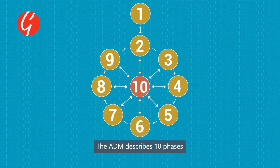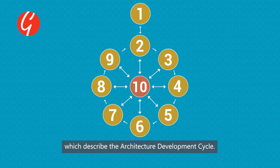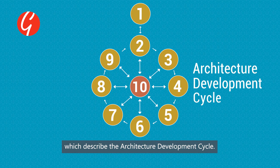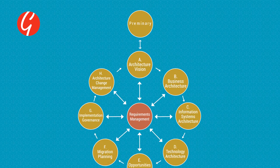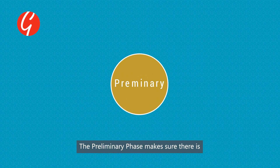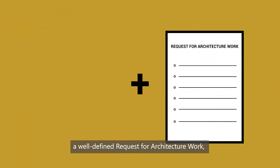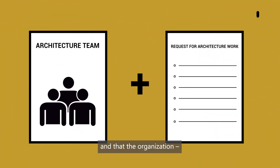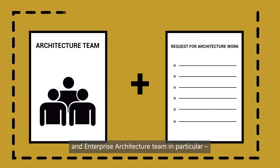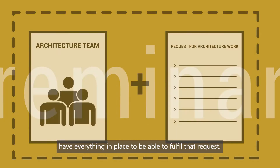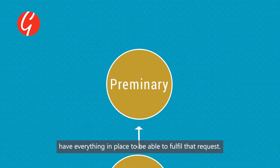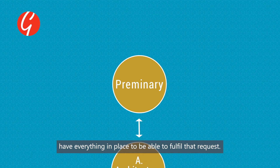The ADM describes 10 phases which describe the architecture development cycle. The preliminary phase makes sure there is a well-defined request for architectural work and that the organization and enterprise architecture team in particular have everything in place to be able to fulfill that request.